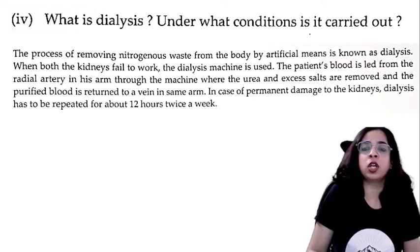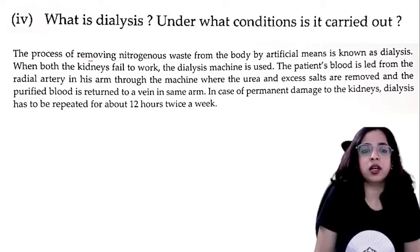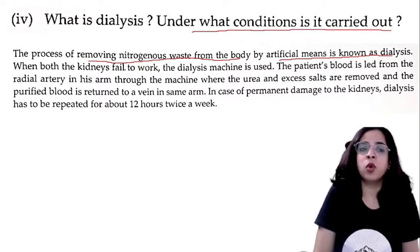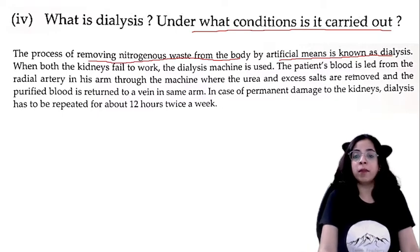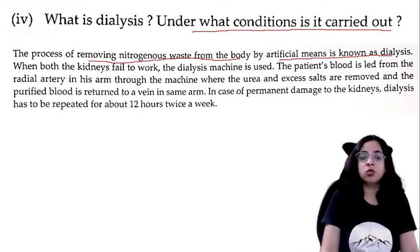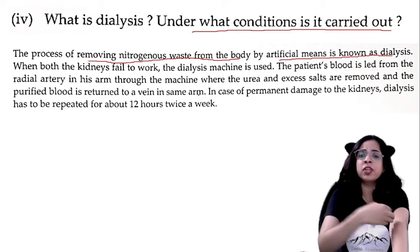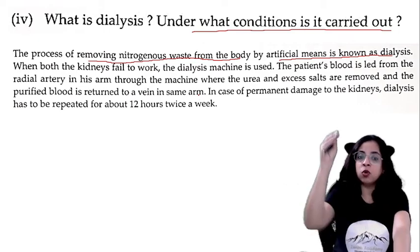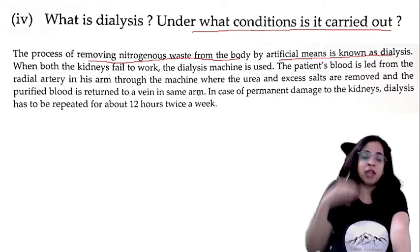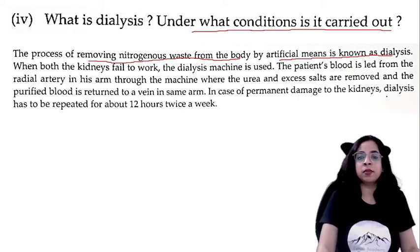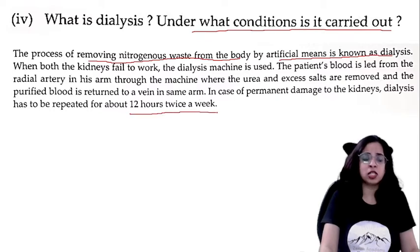What is dialysis and under what condition is it carried out? Dialysis is the process of removing nitrogenous waste from the body by artificial means. It is carried out when both kidneys fail to work. The patient's blood is led from the radial artery through the dialysis machine, where urea and excess salts are removed, and the purified blood is returned to the vein in the same arm. In case of permanent kidney damage, dialysis must be repeated for about 12 hours twice a week.